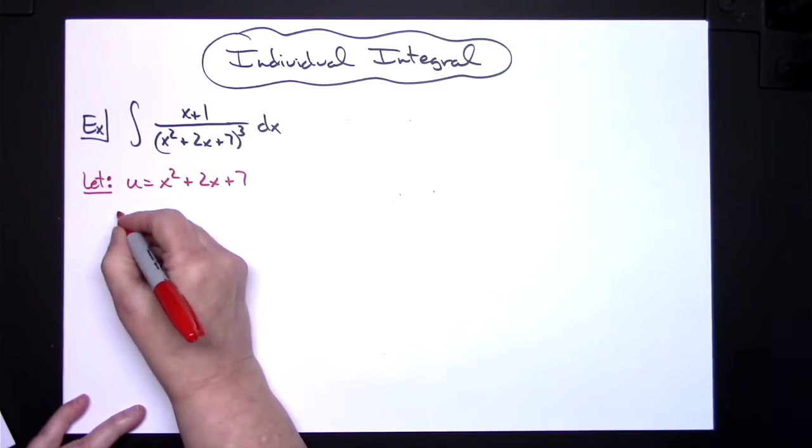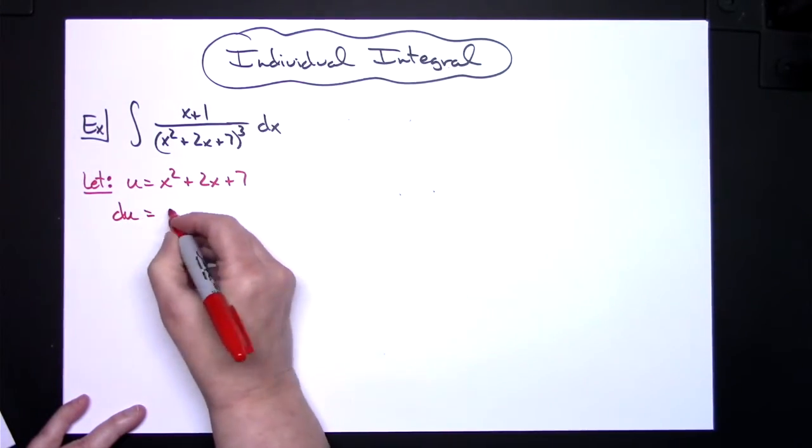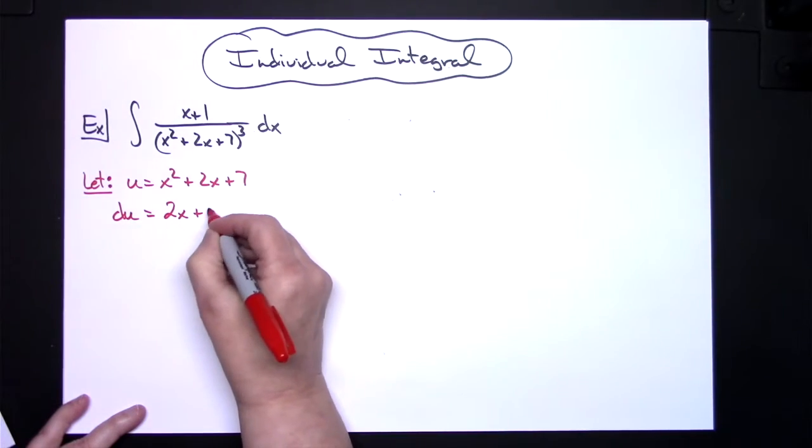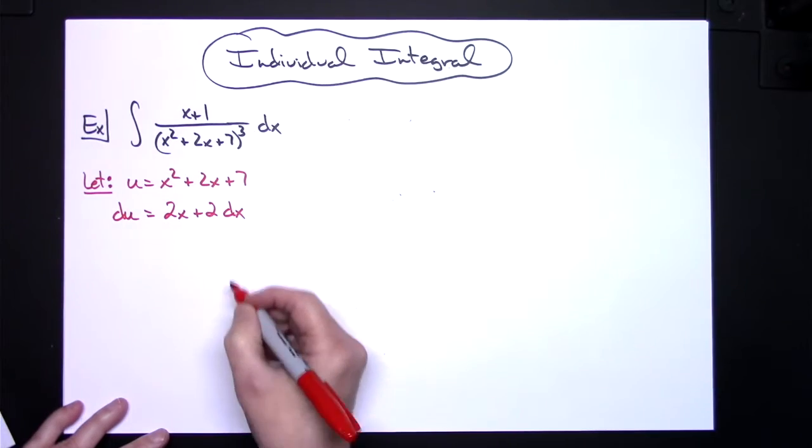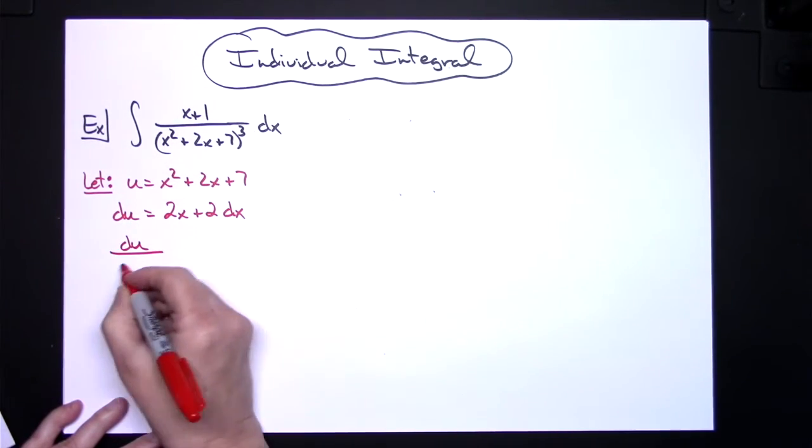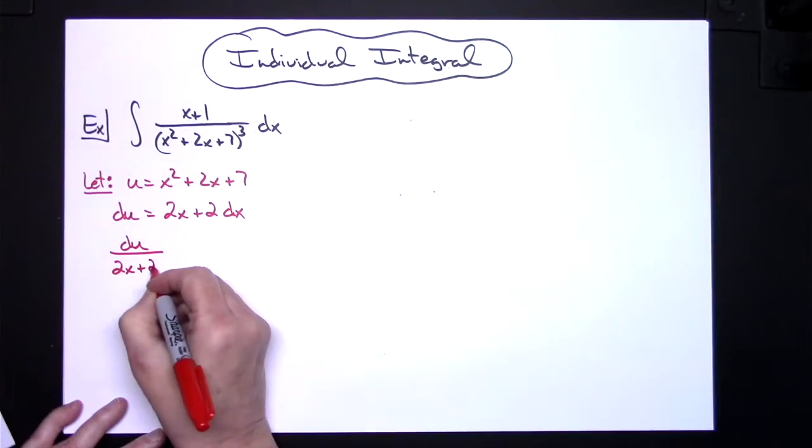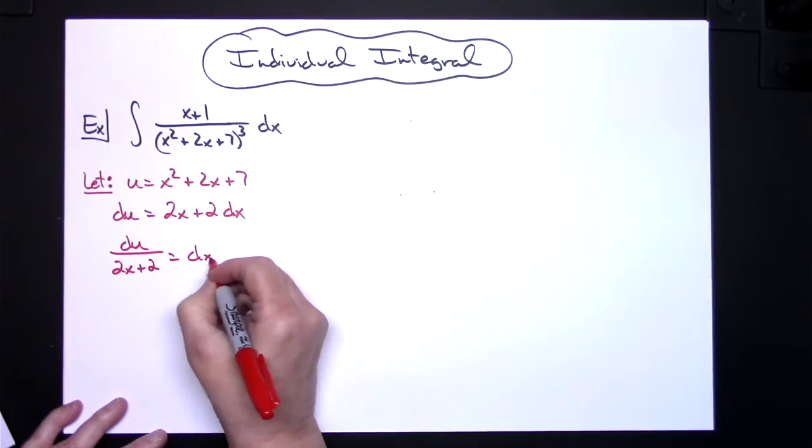I'm going to take the derivative of both sides. du is equal to 2x plus 2 dx. Then I'm going to solve all the way down for dx, so I'll have du over 2x plus 2, and that's going to be equal to that dx.